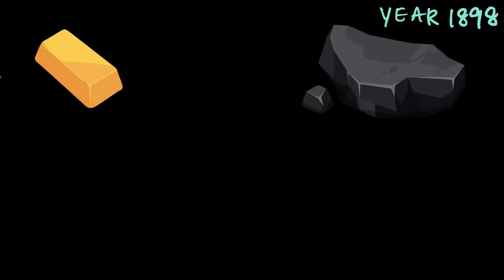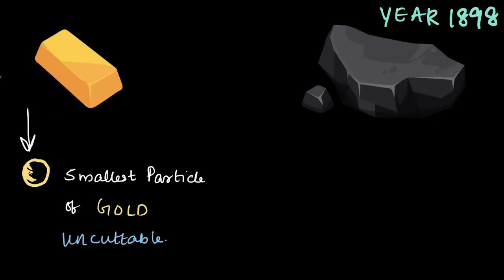Now picture this: we start cutting this gold bar into smaller and smaller pieces. First we cut it in half, then we cut the half into another half, and we keep going. Eventually we'll reach a point where we have a single particle of gold that cannot be further divided. This is the smallest particle of gold, the smallest unit of gold, and it is uncuttable further.